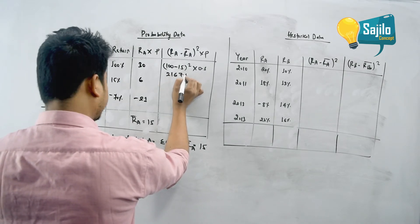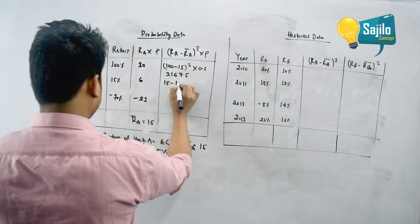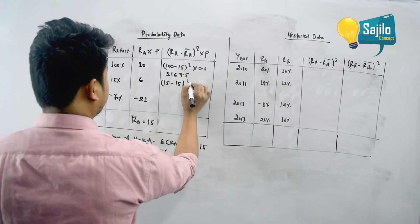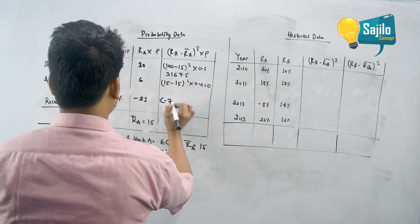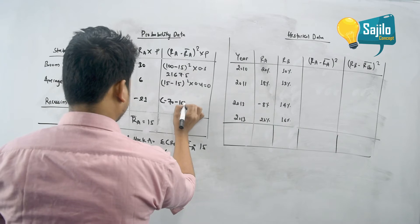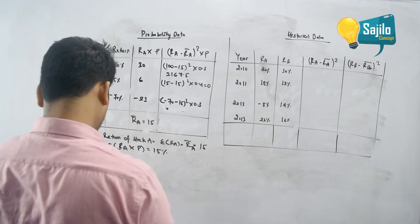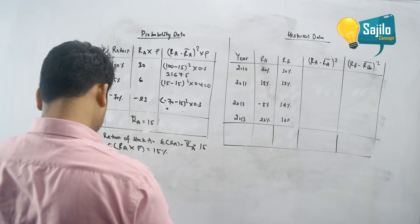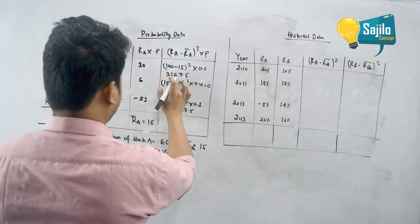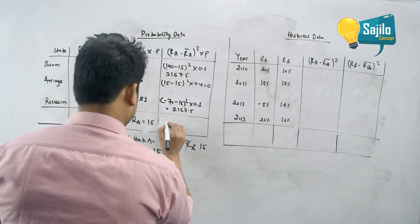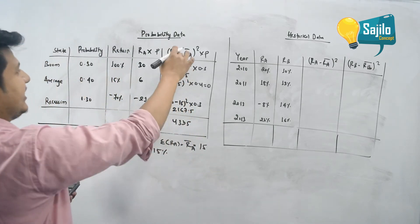That gives 2167.5. Then 15 minus 15 squared into 0.4 gives 0. Then minus 70 minus 15 squared into 0.3; equivalently 70 plus 15 squared into 0.3 also gives 2167.5. So 2167.5 into 0.3 gives approximately 4335. So R_A minus R_A-bar squared into P equals 4335.